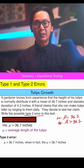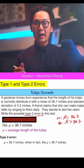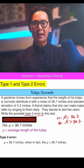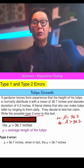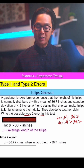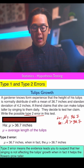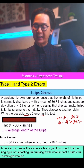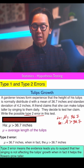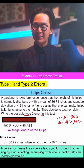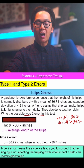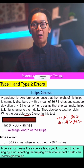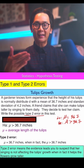It may sound a little robotic, but we can rewrite it to make it more understandable. The type 2 error means: the evidence leads you to suspect that her singing is not affecting the tulips' growth, when in fact it helps the flower grow taller. And that is how you write type 1 and type 2 errors using the cover-up method.